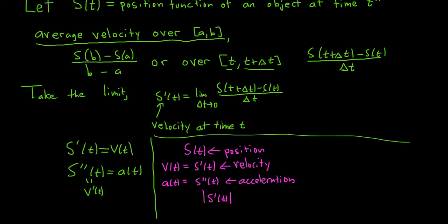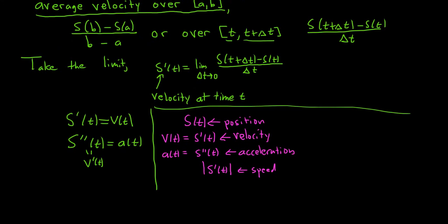Extra knowledge: if you take the absolute value of the velocity, that's called speed — because velocity has a direction, and speed is its magnitude. Also, if you take the third derivative of position, you get something called the jerk, which is the rate of change of acceleration.